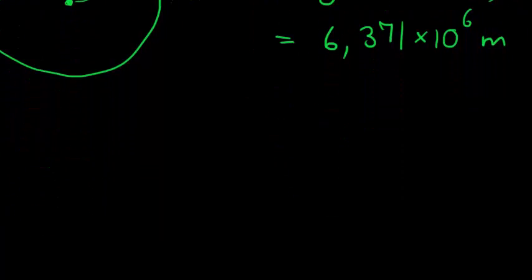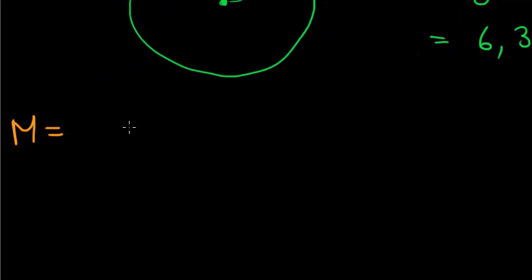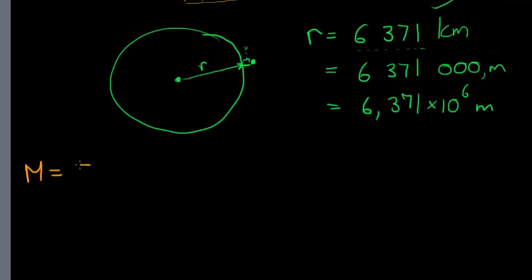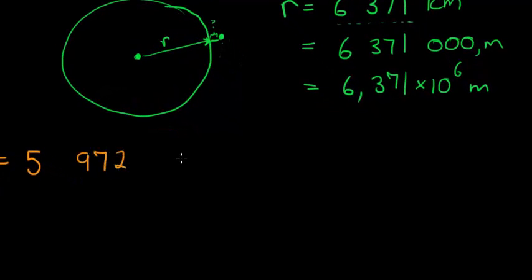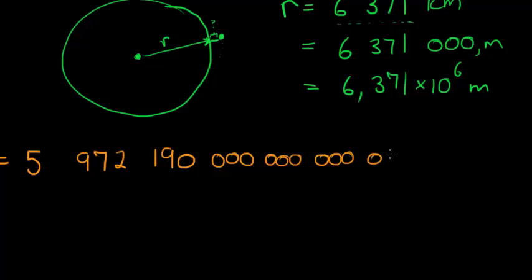How about the mass of the Earth? The mass of the Earth is 5, 9, 7, 2, 1, 9, 0, and 18 more zeros: 1, 2, 3, 6, 9, 12, 15, 18. So obviously writing down this, writing out this would be ridiculous on a piece of paper.